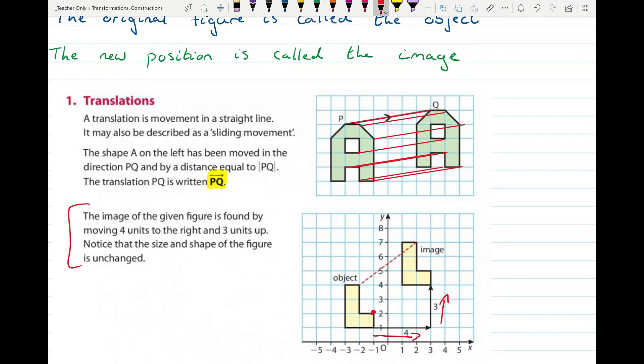So for this dot up here, I'll come out four one two three four and up three one two three. And it sits on its new position up there. The same with any of these. Out four one two three four and up three one two three. And it sits on its new image up there. Now if I was completing this, I wouldn't be putting in all of those little marks. I just simply have a dot where it began and a dot where it finished up. And that shows its movement. So that could be described as moving four units to the right and three units up.